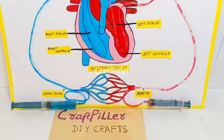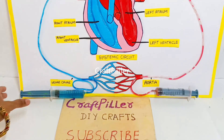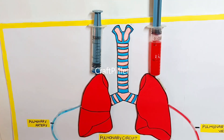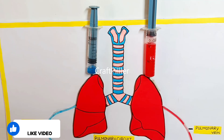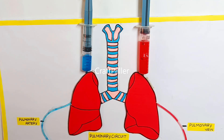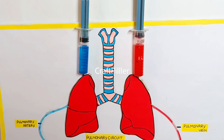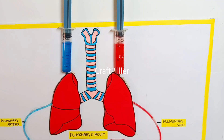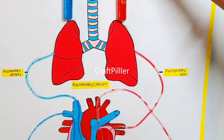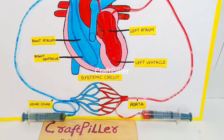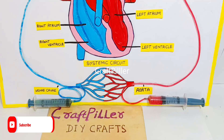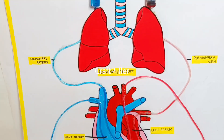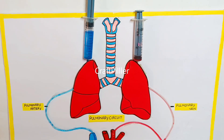We are now demonstrating by injecting the syringe — which represents deoxygenated blood. As you can see, that deoxygenated blood goes to the heart and then to the lungs. Once the lungs receive the deoxygenated blood, it gets oxygenated through the inhale and exhale process. The oxygenated blood is then pumped back to the heart via the left atrium, then through the aorta to the various parts of the body. This entire process has been depicted using simple syringes to effectively demonstrate how the blood circulatory system really works.